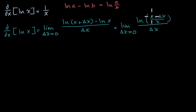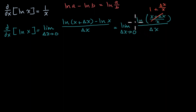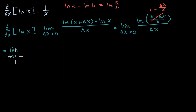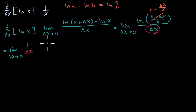Inside of this logarithm, x divided by x is one, and then delta x divided by x we could just write as delta x over x. And then we could put a one over delta x out front. So this is the same thing as the limit as delta x approaches zero of one over delta x times the natural log of one plus delta x over x.